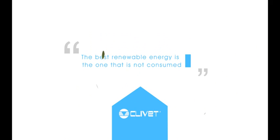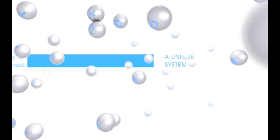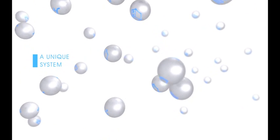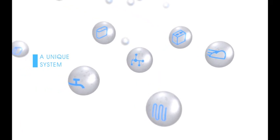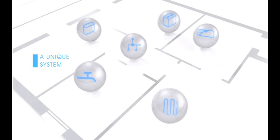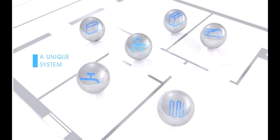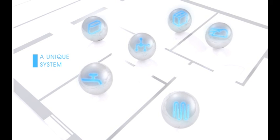For this reason, Clivet designs and develops advanced comfort systems designed for saving energy. With these solutions, all system elements are part of a unique system specifically designed for the requirements of the building accommodating it.